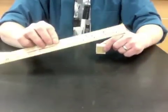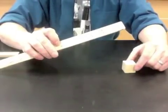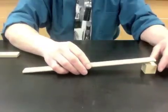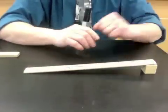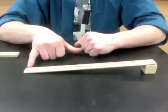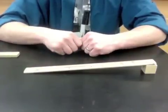You're going to be given a ruler and a small block of wood. I want you to build a ramp for me using the small block of wood and the ruler, making sure that the zero end of the ruler is against the table.